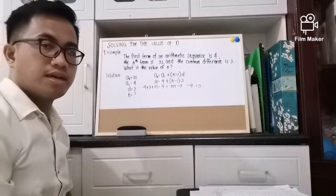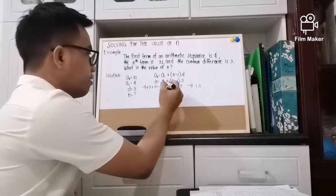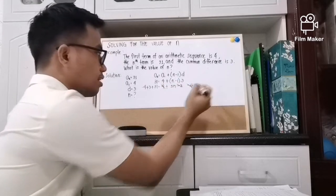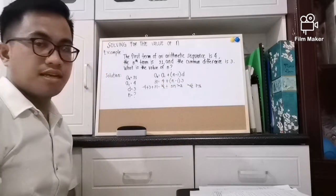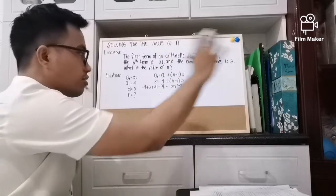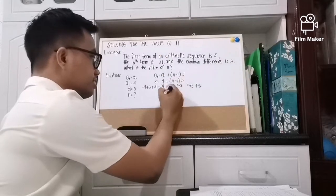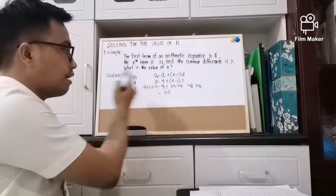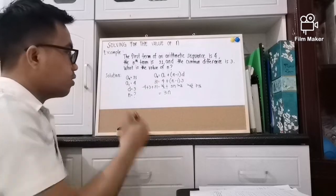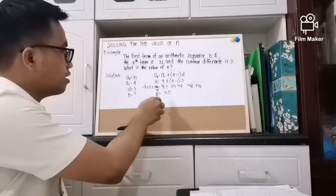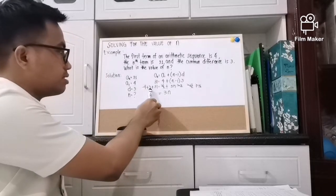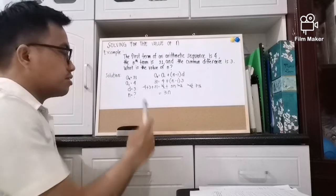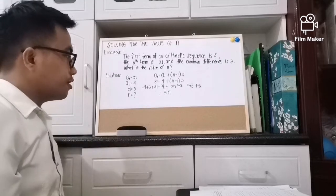After applying positive 3 and negative 4 on the left side, what is left on the right side is 3n, while on the left side we have 31 plus 3 is 34, minus 4.